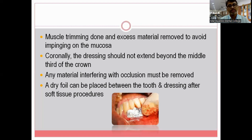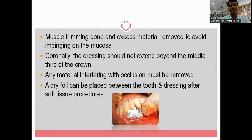When performing soft tissue grafts or soft tissue procedures, you can place a sterile dry foil or aluminium foil onto the site before placing the dressing. The purpose is to avoid the knots of your sutures getting incorporated into the dressing material. If knots become incorporated, removing the dressing could pull the sutures through the tissues. This step is particularly important for recession treatment procedures.